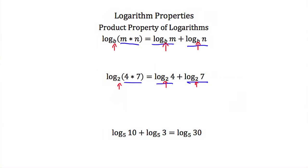This works in the other direction as well. If we had the log of ten and the log of three added together, and we saw that these had the same base — in this case five — then the log of ten plus the log of three would be equal to the log of thirty, because thirty is just ten times three.